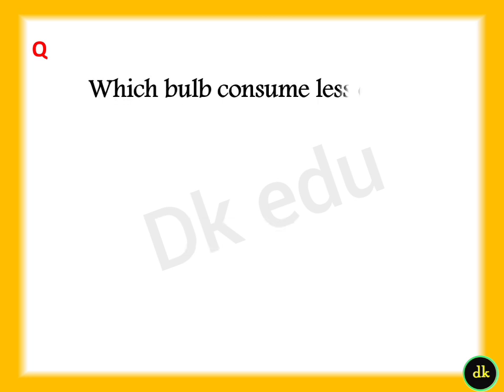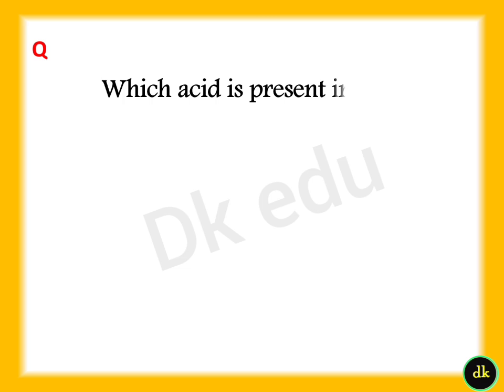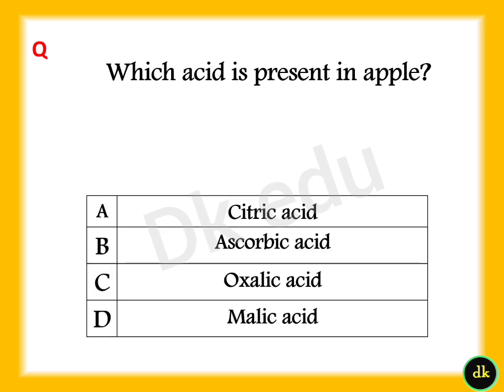Which bulb consumes less energy? Answer: Option C, LED. Which acid is present in apple? Answer: Option D, Malic acid.